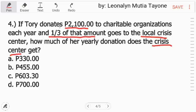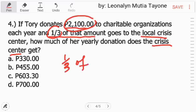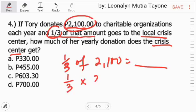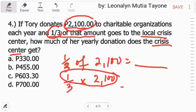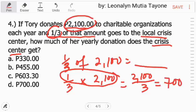So, just one-third of 2,100. So, one-third of 2,100 equals yan na yung sagot natin. So, ang of ay multiplication. Then, 2,100. 2,100 over 3. And this is 700.